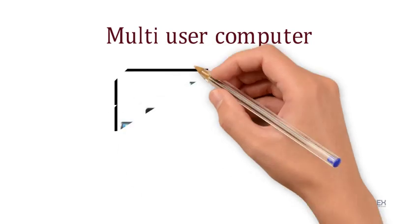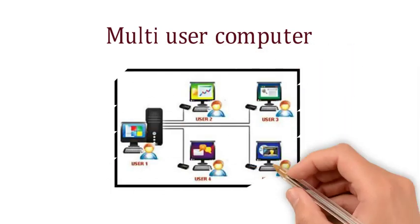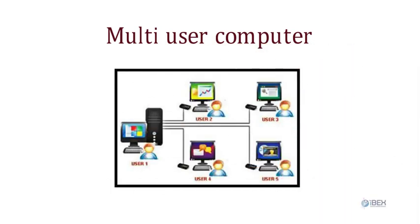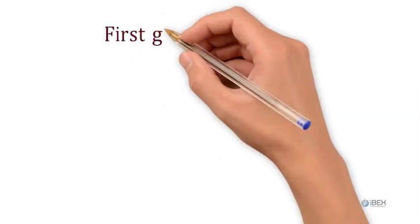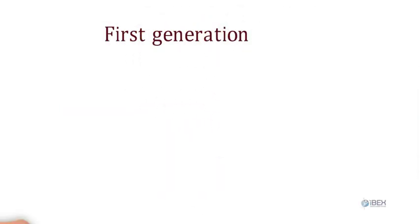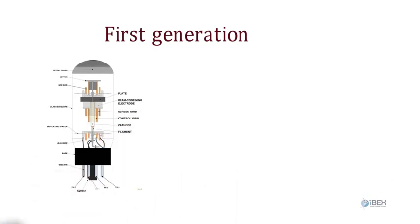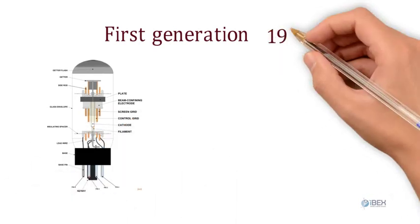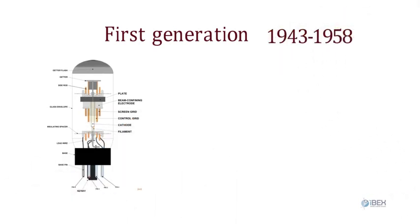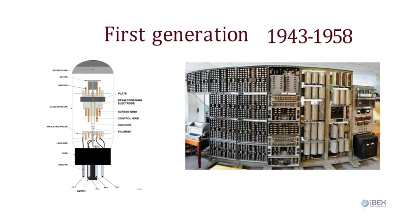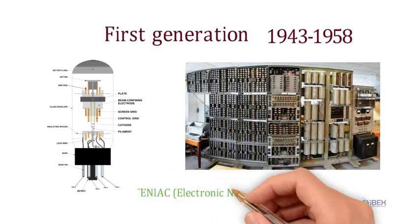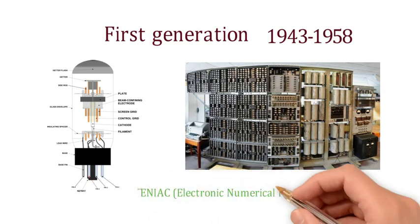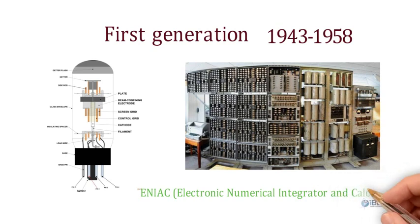Computer technology evolution can be divided into five generations. First generation computers consisted of vacuum tubes and were used from 1943 to 1958. ENIAC — Electronic Numerical Integrator and Calculator — is an example of a first generation computer.